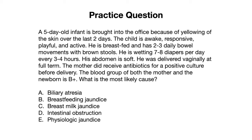The answer is E — physiologic jaundice. Biliary atresia would usually present with pathologic jaundice early on within the first 24 hours, and the baby's stools would not be brown but acholic. Breastfeeding jaundice would be concerning if the mother was not producing enough milk or if the baby was not having a significant number of wet and dirty diapers.